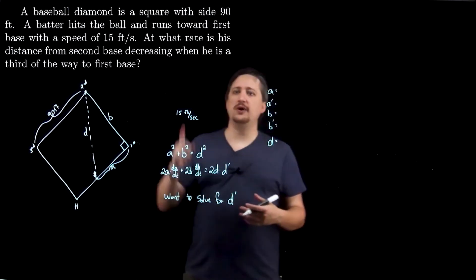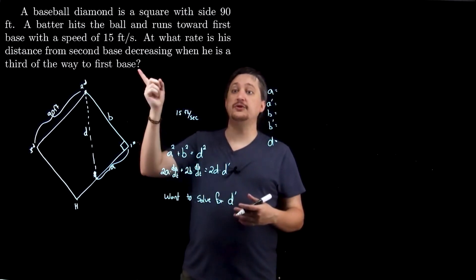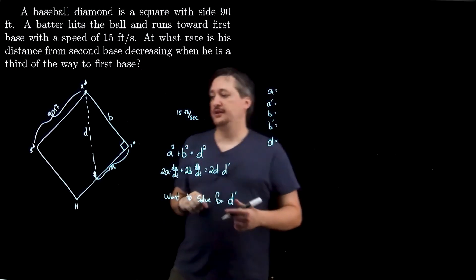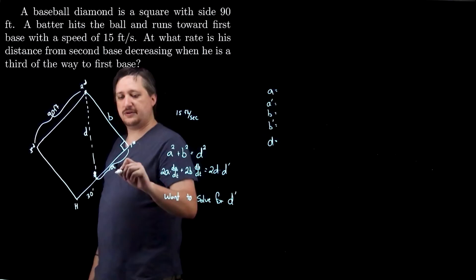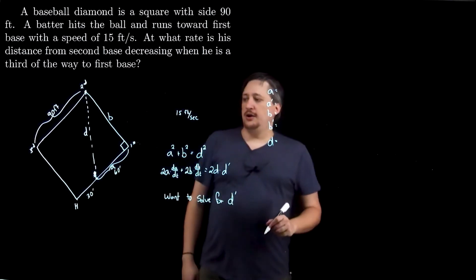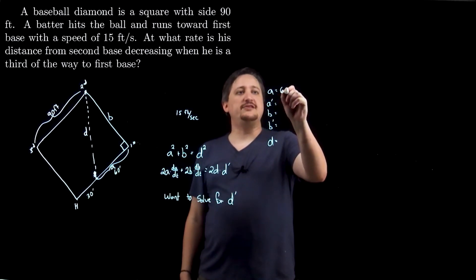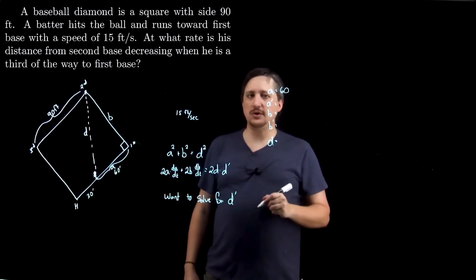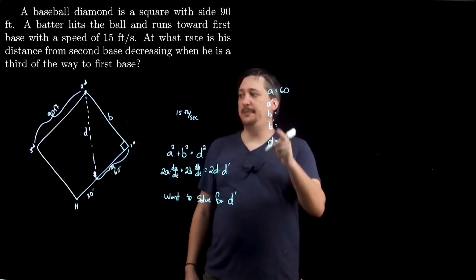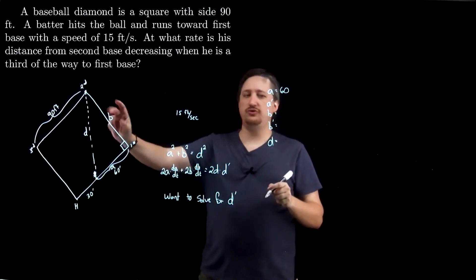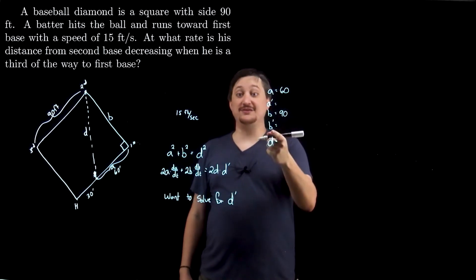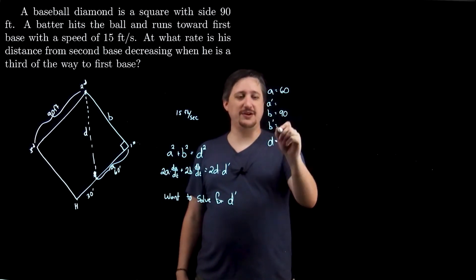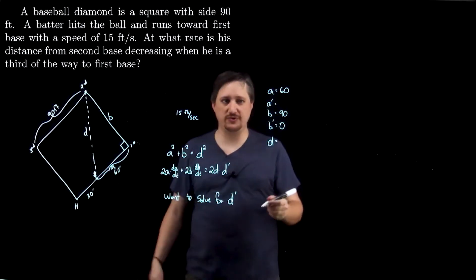So I need a, a prime, b, b prime, and d. These are all things that I need to figure out at the time that I'm interested in, because again, I could have plugged in some stuff because I have numbers floating around, but I don't ever want to plug in anything that I can avoid plugging in until I've taken the derivative. So now that I've taken the derivative, now I can go through this. I know that the person is a third of the way to first base. So a third of 90, so there's 30 feet behind him and there is 60 feet in front of them. So that means a, at the point I'm interested in, is 60 feet.